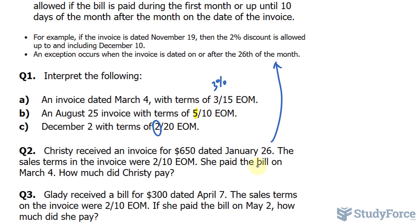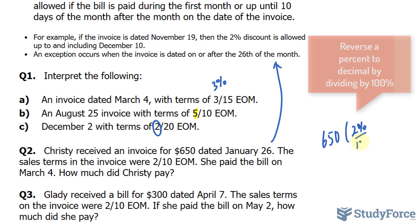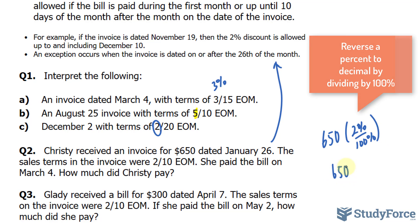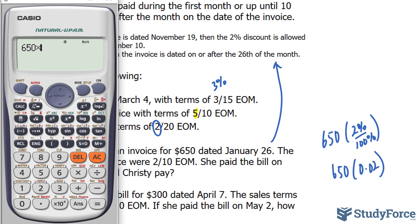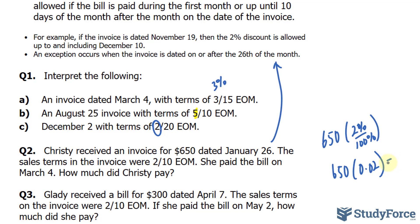Normally, if this were January 25th, you would have to pay before February 10th in order to get the discount. But because it's on the 26th or later, you will still receive the discount up until March 10th. So if she's getting 2%, we take 650 and multiply it by 0.02. Using our calculator, 650 times 0.02 gives us 13. Subtracting 13 from the base value, we get $637.